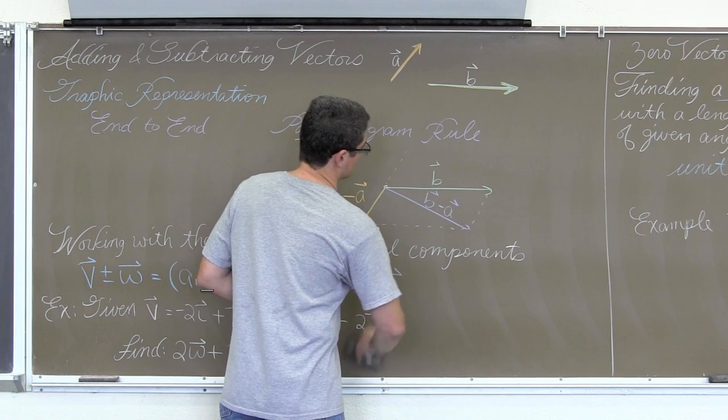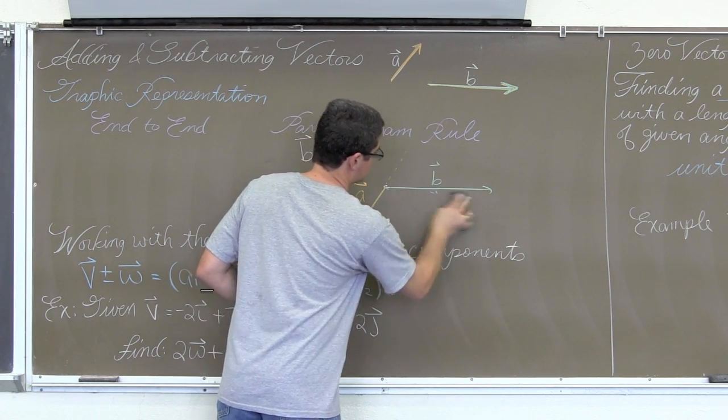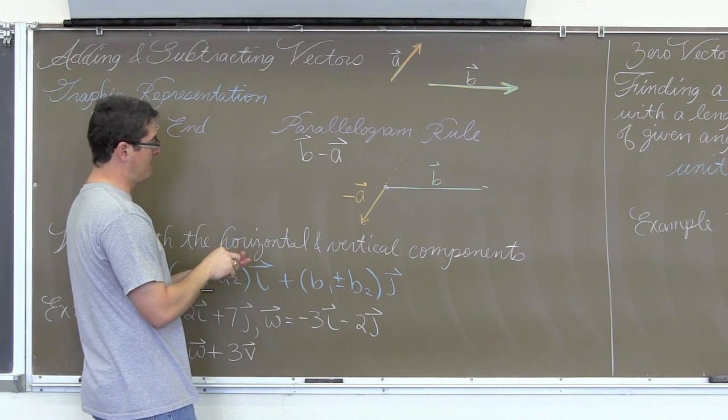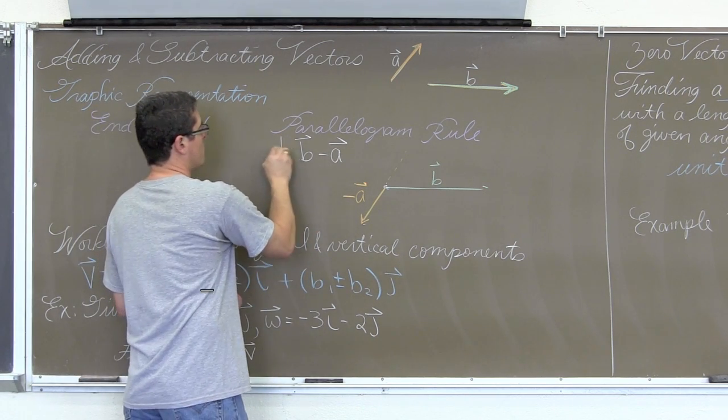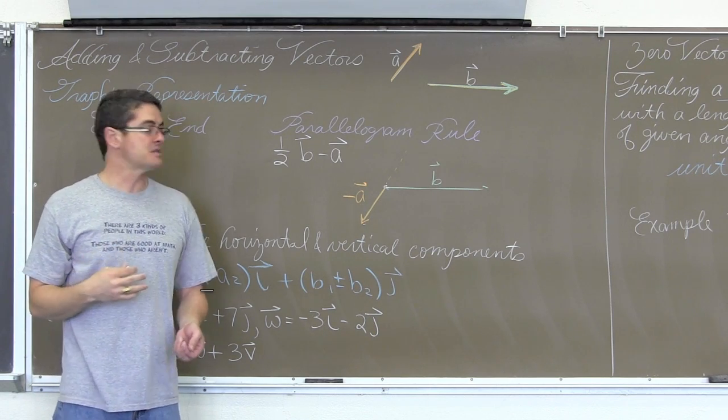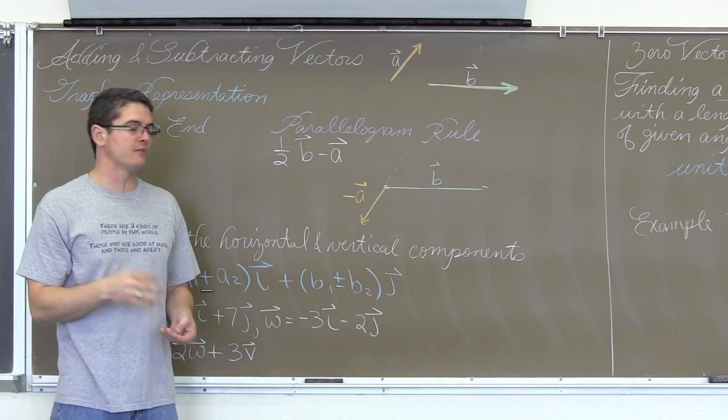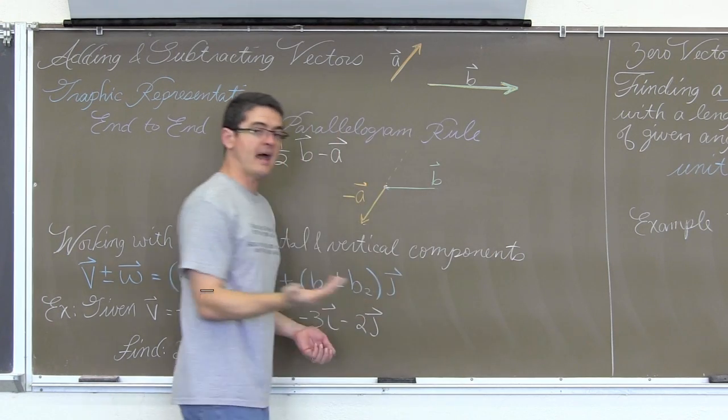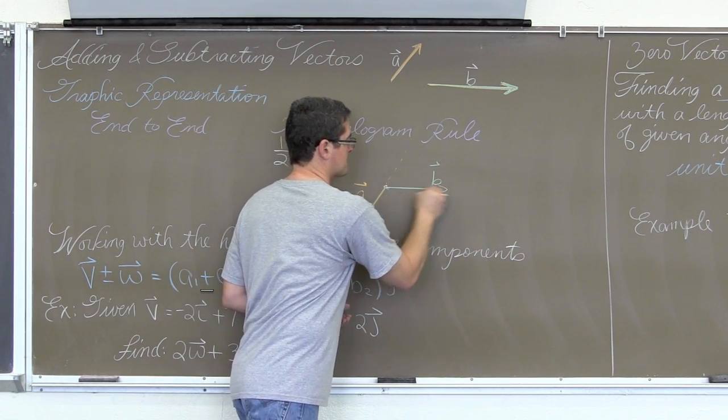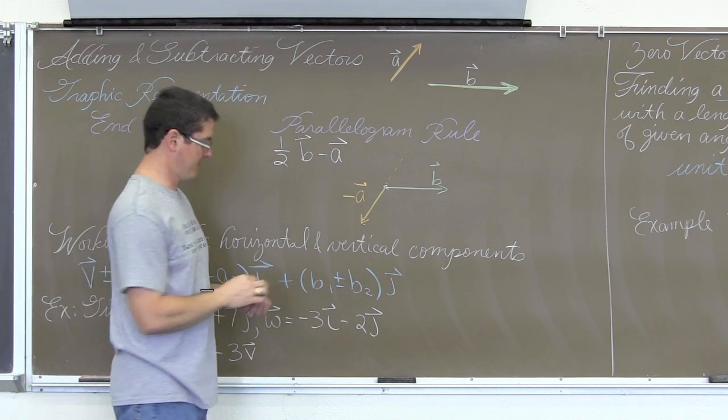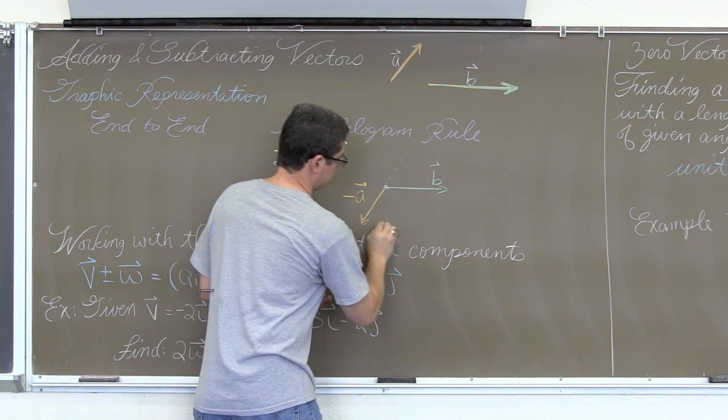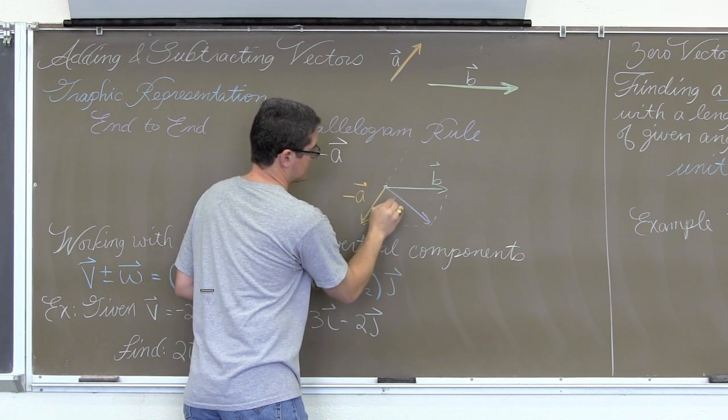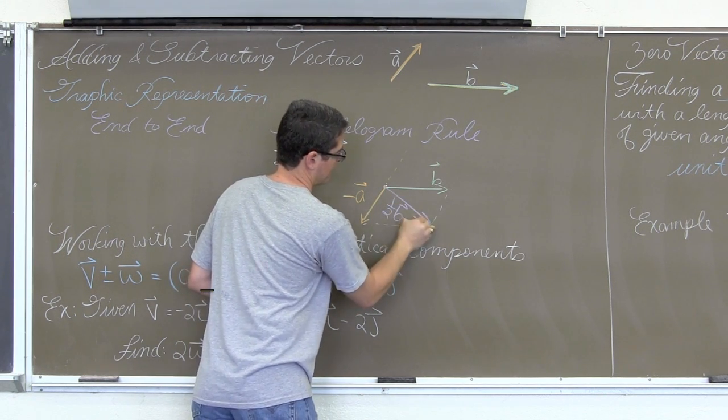What if I wanted to draw the representation of instead of b minus a, vector b minus vector a, I want to do one-half vector b minus a. I want to apply a scalar multiple of one-half. That is going to take vector b and simply shrink it in half, cut its magnitude or its length down by half. And again, parallelogram and draw your diagonal as your resultant.